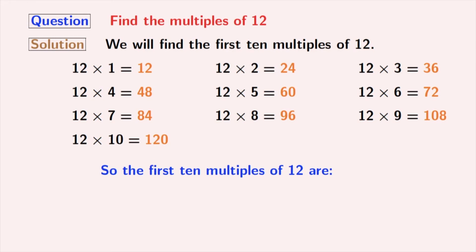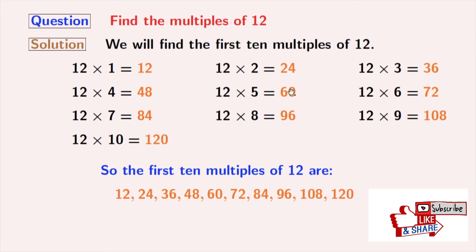So, the first 10 multiples of 12 are the orange ones. These are 12, 24, 36, 48, 60, 72, 84, 96, 108 and 120. You can find more multiples of 12 following the same way.